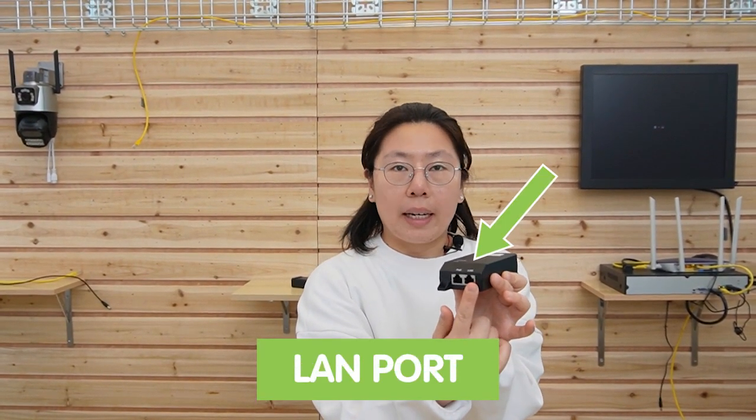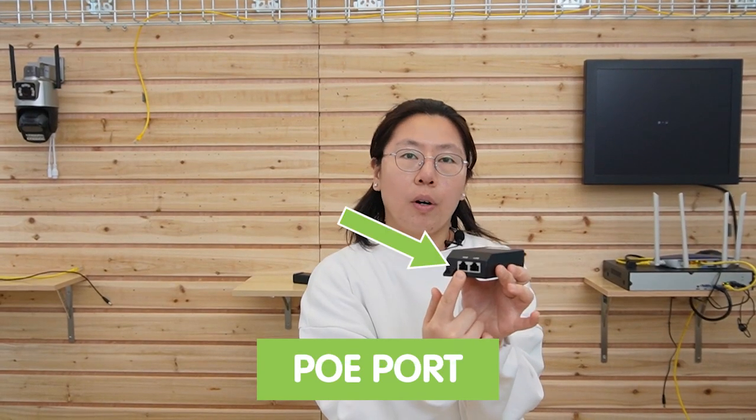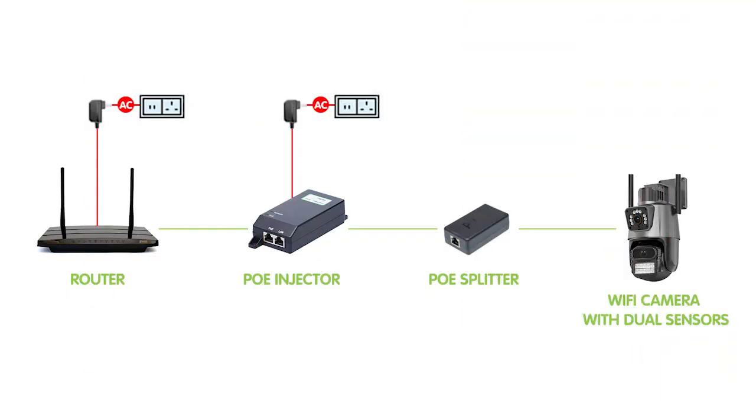For the LAN port, you can connect it with the main network. And for this port, we connect it with the PoE cable through to the camera. And don't forget, we have the AC adapter. We have to plug it in for the power to go in.